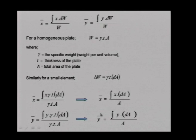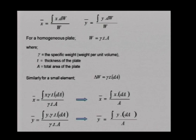For a homogeneous plate, W equals gamma (the specific weight) times the thickness t times the area A. Specific weight times volume gives total weight. Since specific weight and thickness are uniform throughout, the delta-w terms also have the same gamma and t, so x-bar simplifies to the integral of x dA divided by A. Homogeneous means the same all over. So we have expressions for x-bar and y-bar purely as properties of an area.